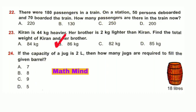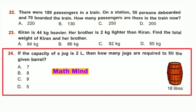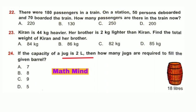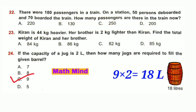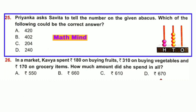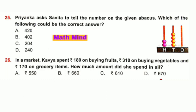Question number 24: If the capacity of a jug is 2 litres, how many jugs are required to fill the given barrel? Capacity of jug is 2 litres. Pouring 2 litres each time, we can fill 18 litres in 9 times: 9 × 2 = 18. Option C is correct. Question number 25: Priyanka asks Avita to tell the number on the given abacus. This is 2 beads in the hundreds place, 4 beads in the tens place, 0 beads in the ones place. The number is 240. Option D is correct.